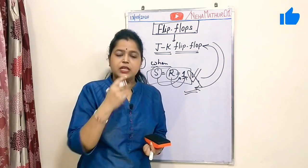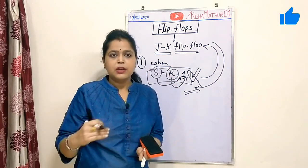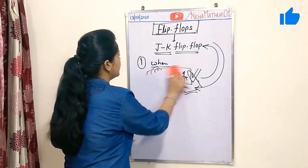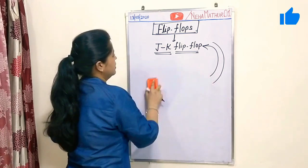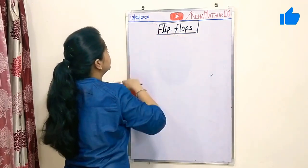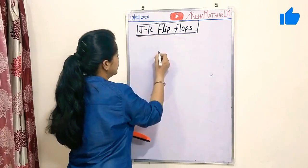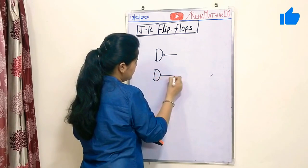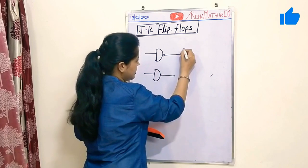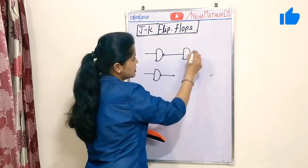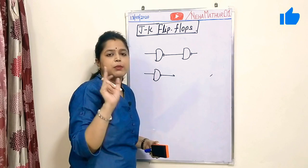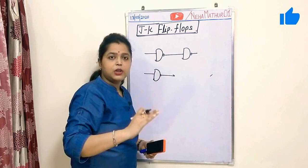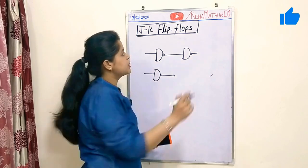We will start with the circuit diagram of JK flip-flop, then with the help of the truth table we will resolve all the cases one by one. The circuit diagram consists of four NAND gates. The same circuit can also be implemented with NOR gates — any universal gate, NAND or NOR, can be used for the implementation of any flip-flop.